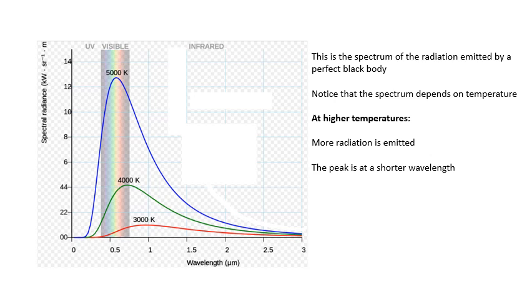Now this is the spectrum of radiation emitted by a perfect black body. There's actually an equation for working out these curves. Notice what does the curve depend on? Well, the main thing is it depends on temperature. If you look at the 5000 Kelvin curve and compare that with the 4000 and 3000 Kelvin curves, basically the hotter the object is, the more radiation it emits.